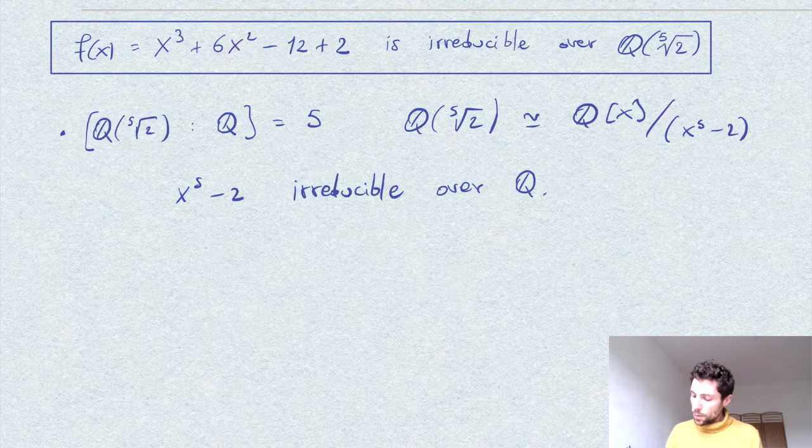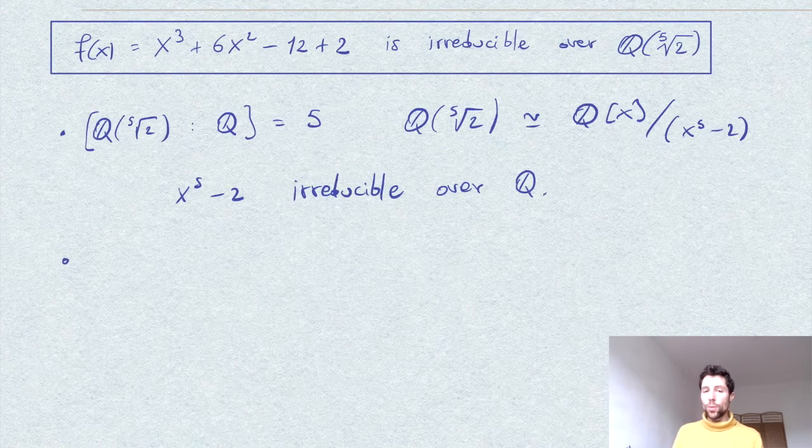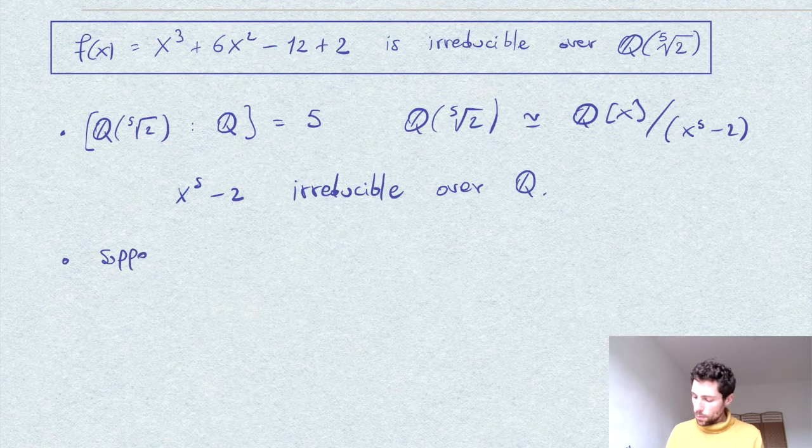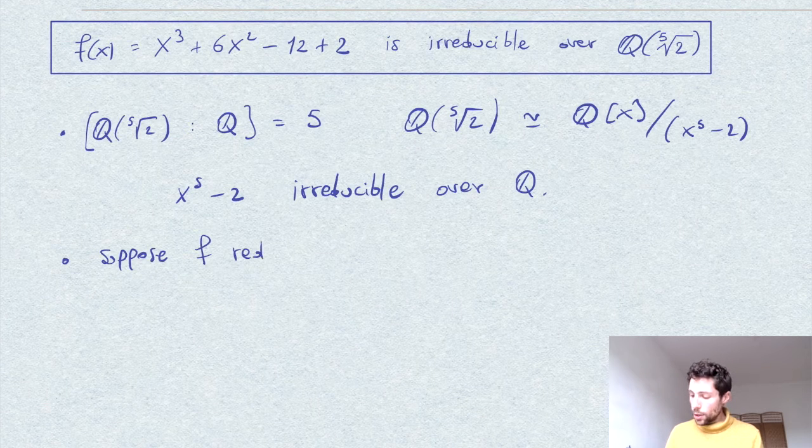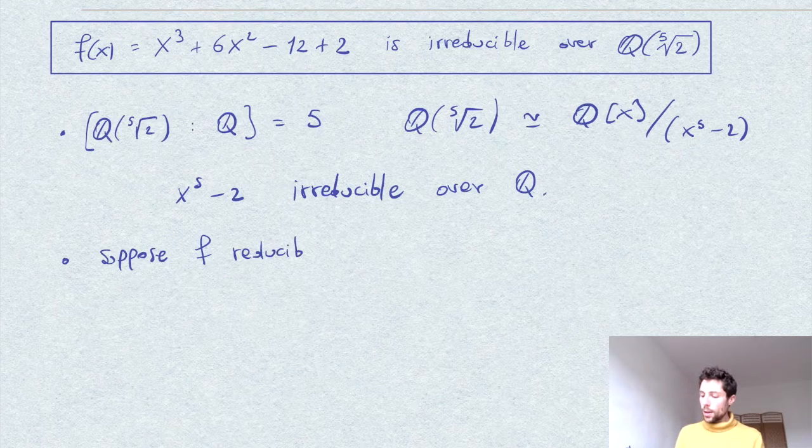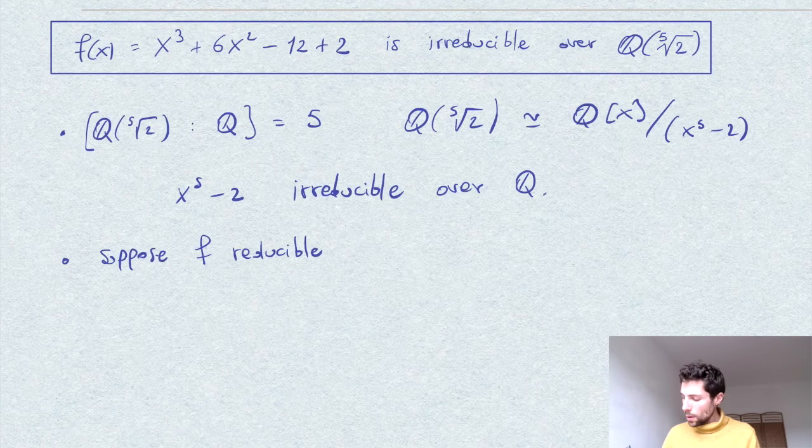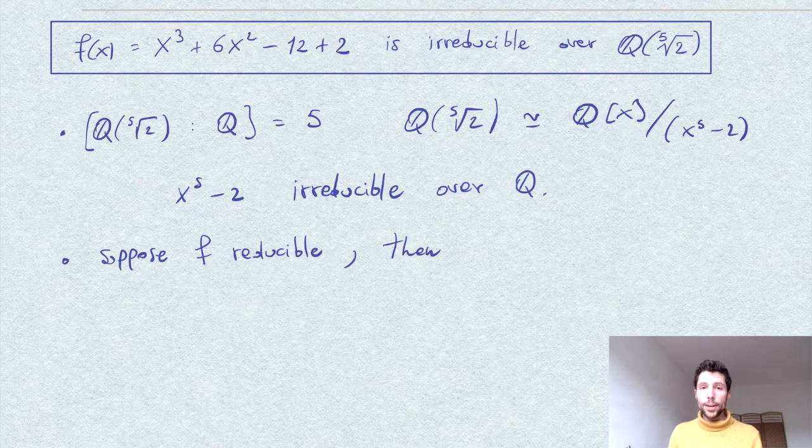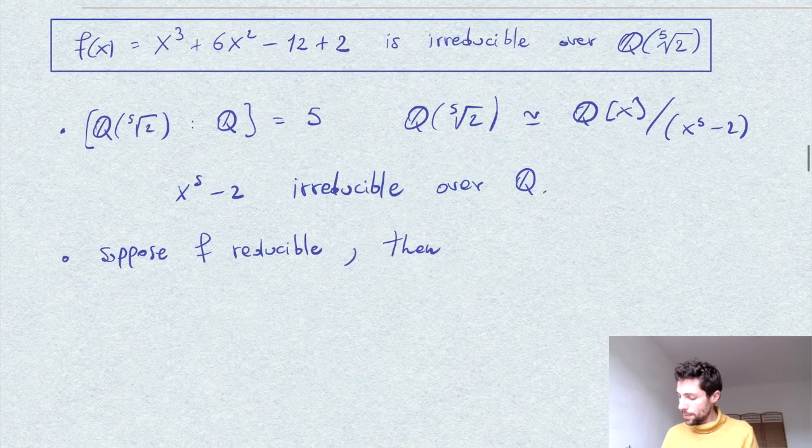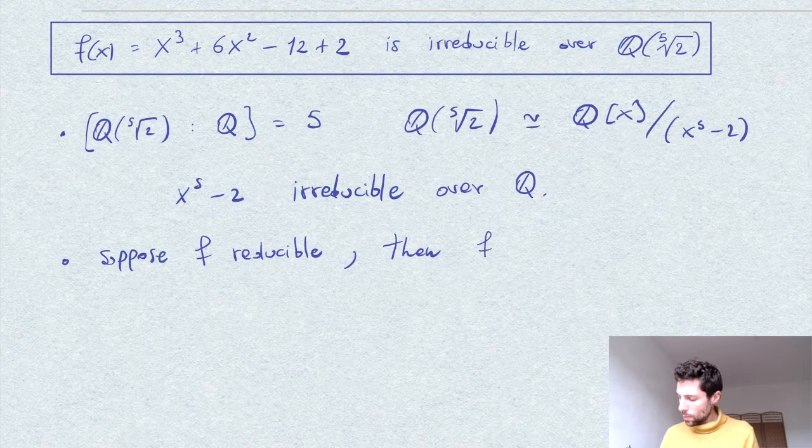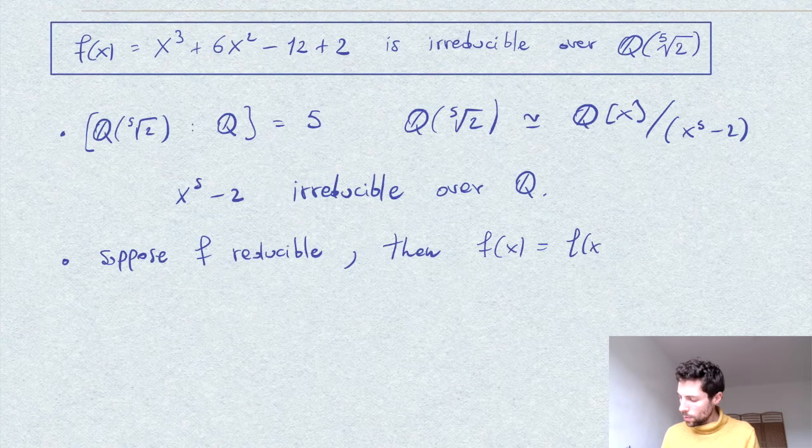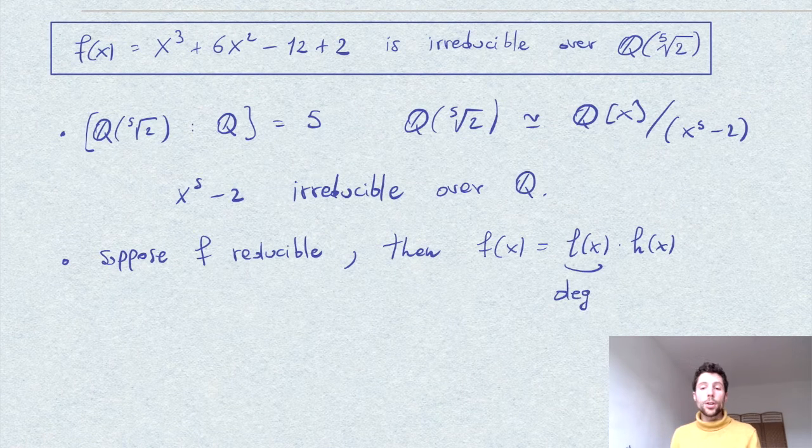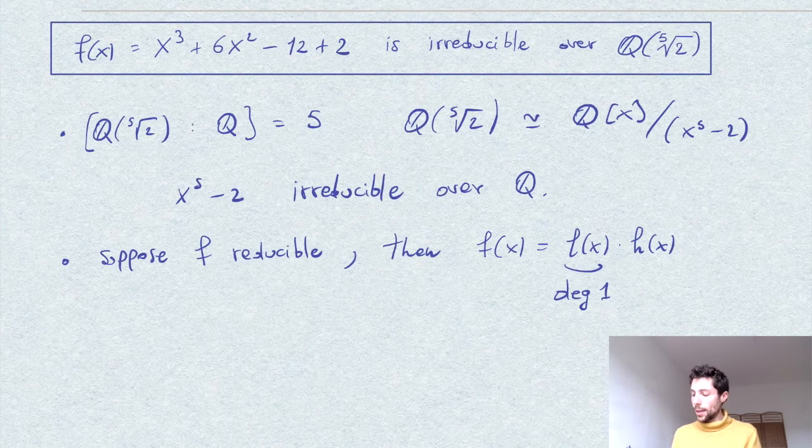Now suppose that f were reducible. It is a cubic, a polynomial of degree 3, and therefore it would split as the product of a polynomial of degree 1, a linear form, and a polynomial of degree 2 necessarily.